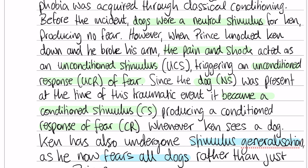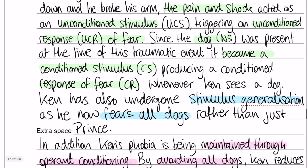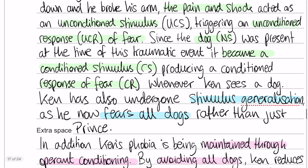That's the classical conditioning element. We've now got an in-between bit: the stem also tells us that Ken avoids all dogs, which means that he has also undergone stimulus generalisation. It's a concept that doesn't really fit into classical or operant conditioning, but it is behaviourist terminology that you will get marks for in this question.